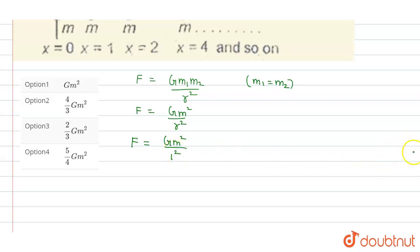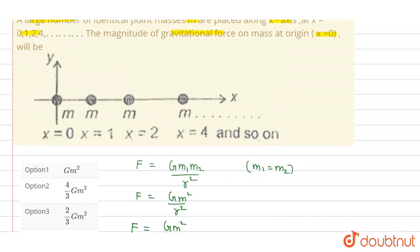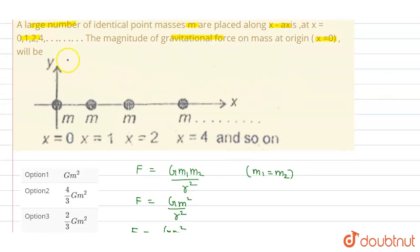...1 squared, because if we consider the point mass at x equals 0 and x equals 1, the distance between these is 1, so we will put the value of r equal to 1. And in the second case, we will consider r equal to 2, because now we will take this point and this, so this is 1 and this is 1, so it will become 2.